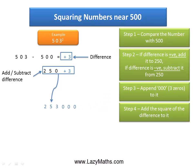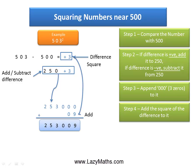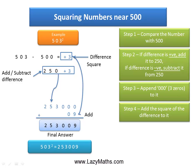And as a last step, we simply take the 3, square it to get 9, and add that 9 to 253,000 to get 253,009 as the final answer. So, 503 squared equals 253,009. And that's it. Thank you.